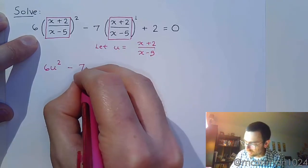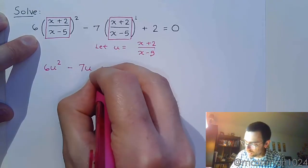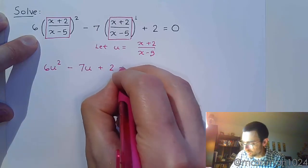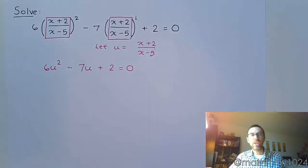Minus 7, instead of that fraction, we're going to write u, plus 2 equals 0.